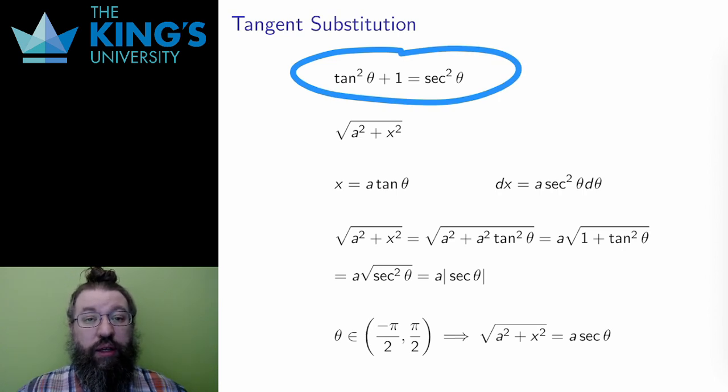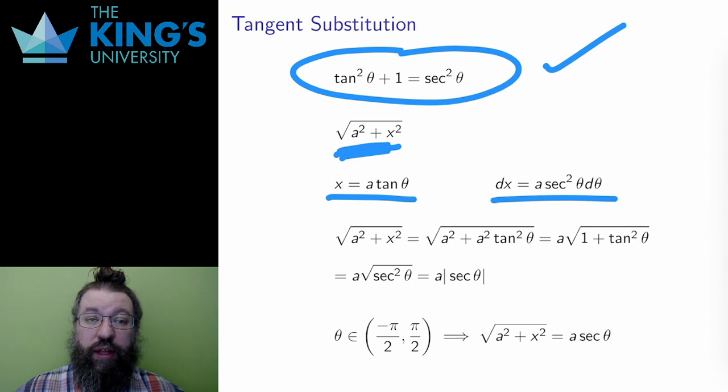Let me go through the other two types quickly, since they each have a different trig substitution. For the sum, the square root of a squared plus x squared, the identity that I need is tan squared theta plus 1 equals secant squared theta. I use x equals a tan theta with dx equals a secant squared theta d theta.